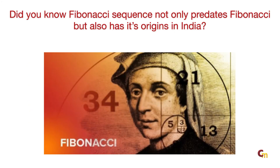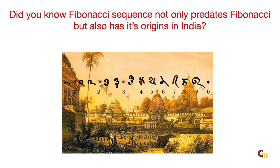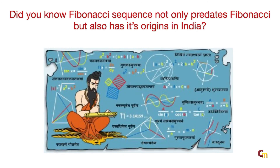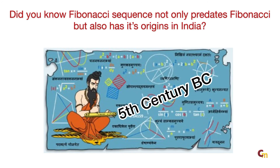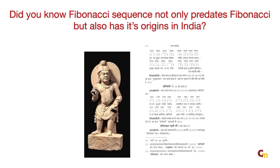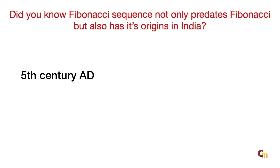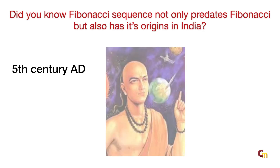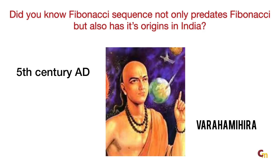Now let's come to the real trivia. Although Fibonacci's Liber Abaci contains the earliest known description of the sequence outside of India, the sequence had been described by Indian mathematicians as early as the 5th century BC — that's 2500 years ago — in the form of Pingal Chand Shastra, written in Sanskrit.